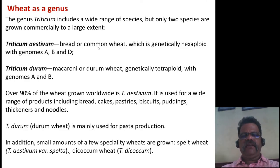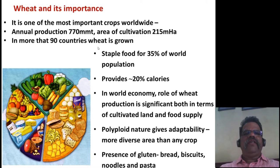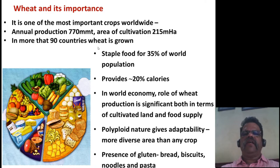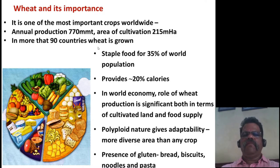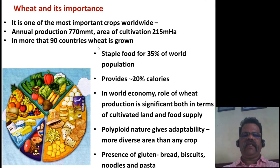Triticum durum is mainly used for pasta production. In addition, small amounts of specialty wheats such as spelt wheat and dicocum wheat are grown. Wheat is unique as one of the most important crops worldwide, with total annual production of 770 million metric tons on an area of 250 million hectares. It is grown in more than 90 countries, is a staple food for more than 35% of the world population, provides 20% of daily calories, and plays a significant role in world economy in terms of cultivated land and food supply. Its qualified nature gives it adaptability to more diverse areas than any other crop.